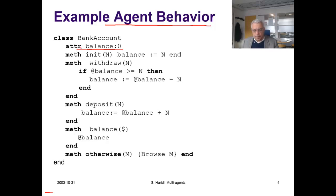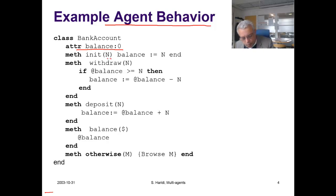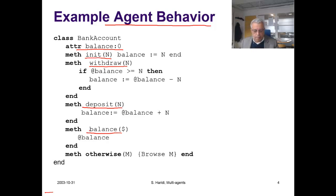The agent can receive messages. In this case we have four messages the agent can receive: `init`, `withdraw`, `deposit`, and `balance`.